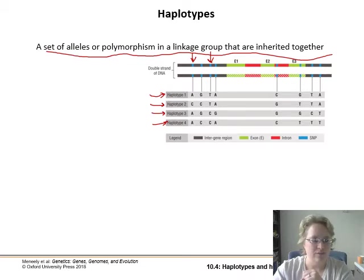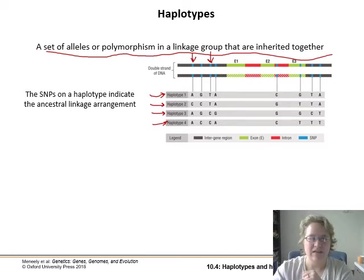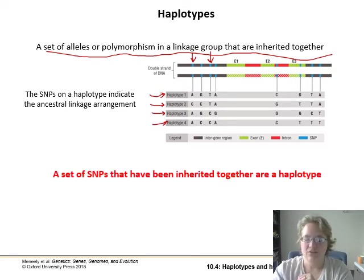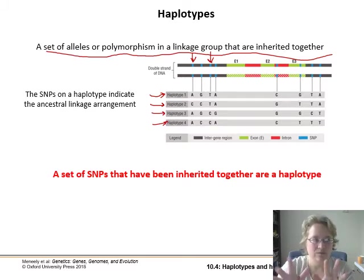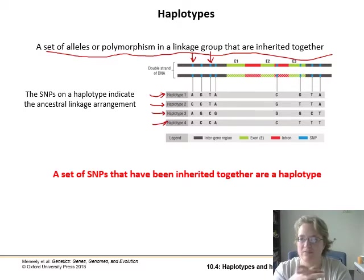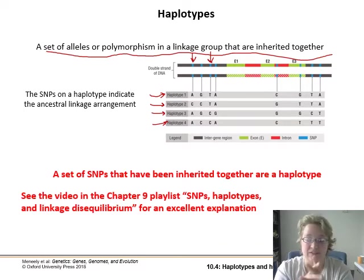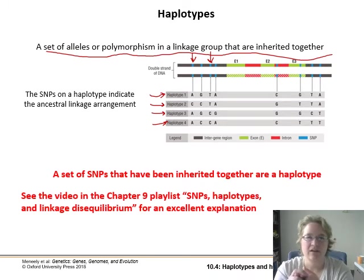The SNPs on a haplotype indicate an ancestral linkage arrangement — they've been like this for a while and aren't likely to swap during recombination. We can group people together almost like in a family tree. A haplotype is a set of SNPs inherited together in a linkage group — think of it as a kind of genetic fingerprint, a certain set of tiny little mutations that make you look different from other people. There's a video in the chapter 9 playlist on SNPs, haplotypes, and linkage equilibrium that explains this really well.